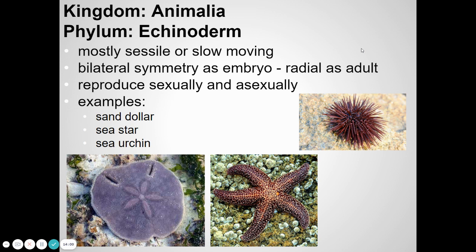Echinoderms include things you might find at the beach — starfish, sand dollars, and sea urchins with spikes. They have radial symmetry, meaning they're organized in a circular pattern.